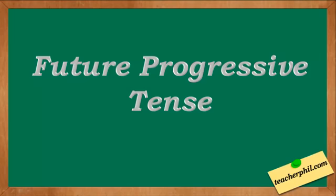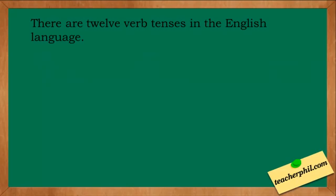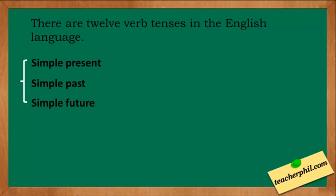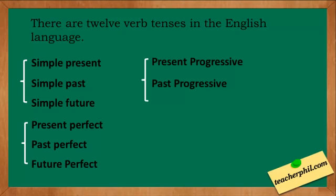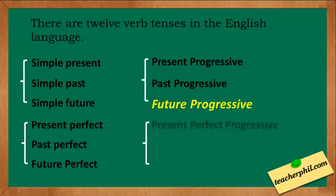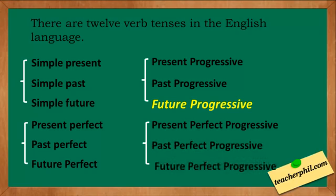Future Progressive Tense. There are 12 verb tenses in the English language: the simple present, simple past, simple future, present perfect, past perfect, future perfect, present progressive, past progressive, future progressive, present perfect progressive, past perfect progressive, and future perfect progressive. This lesson will talk about the future progressive tense.